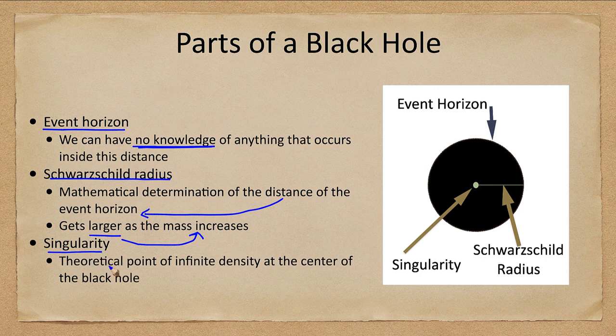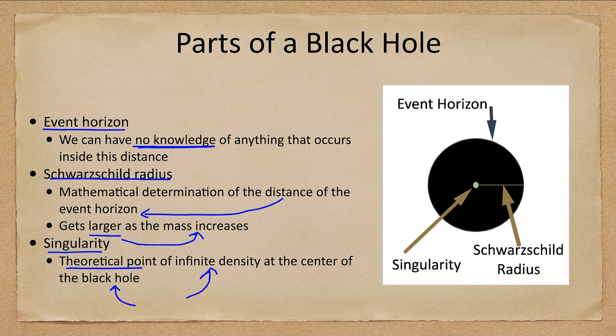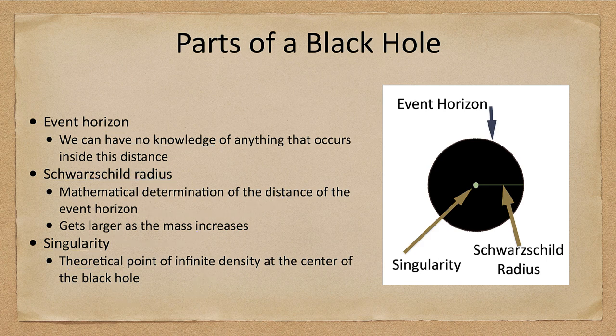What is a singularity? The singularity is a theoretical point of infinite density. Right now we know of nothing that would stop the collapse beyond the degenerate neutron pressure, and at the center of the black hole, this would be a point of infinite density. That leads to its own problems — is there something else that would stop the collapse? Even if we could go inside to find out, we'd never be able to get that information back out. So it is still a theoretical question as to what really happens to that central object.